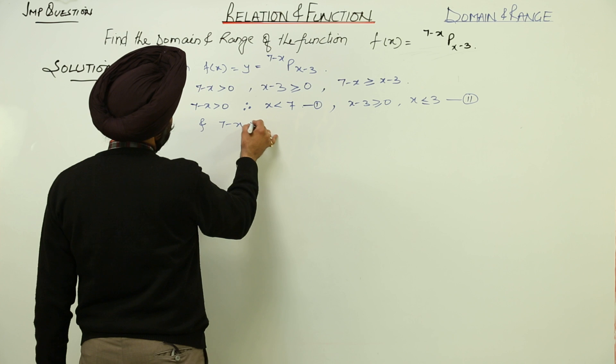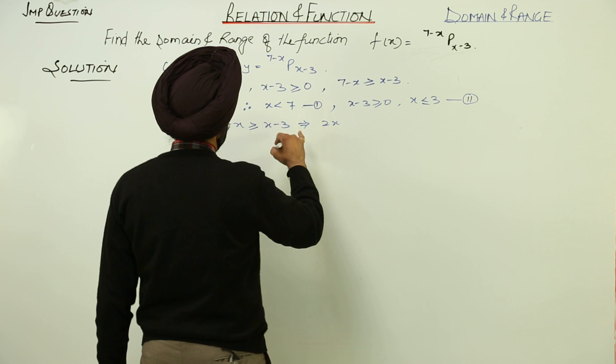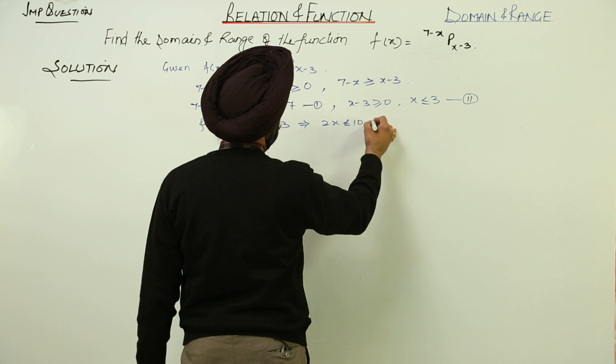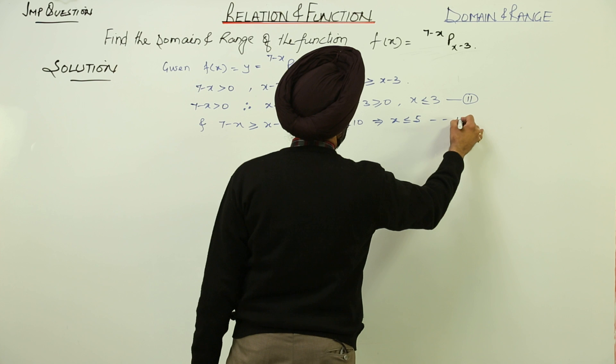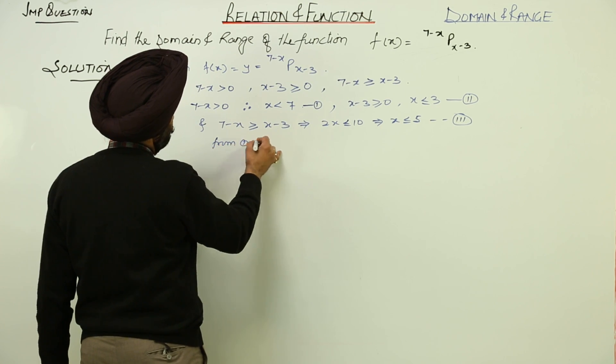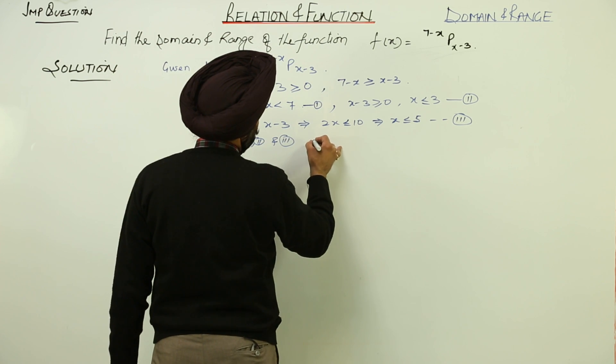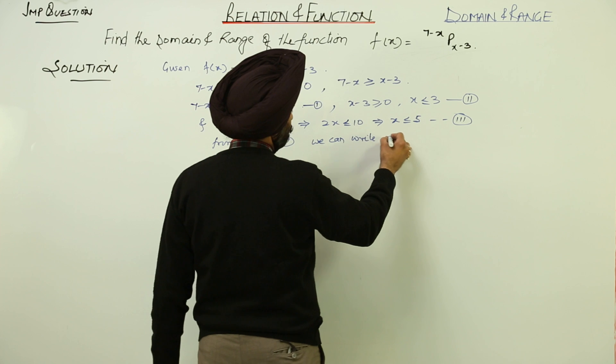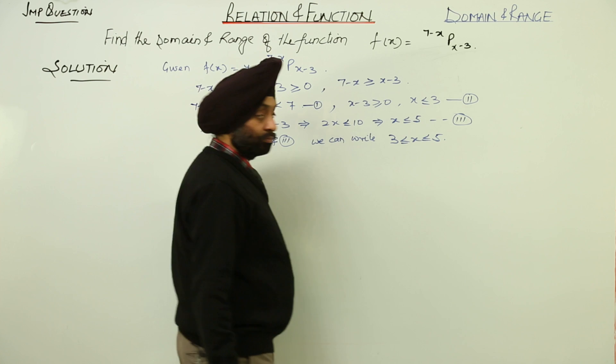And 7 minus x is greater than or equal to x minus 3. This implies 2x is less than or equal to 10, and this implies x is less than or equal to 5. Let this be 3. Now, from 1, 2 and 3, we can write 3 is less than or equal to x is less than or equal to 5.